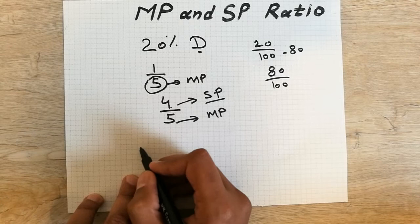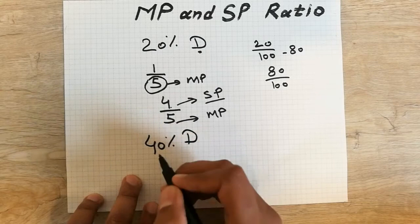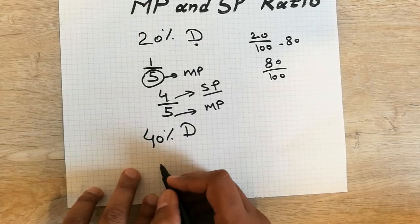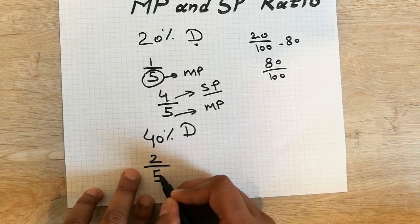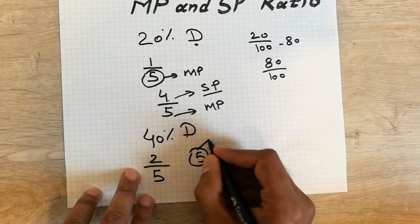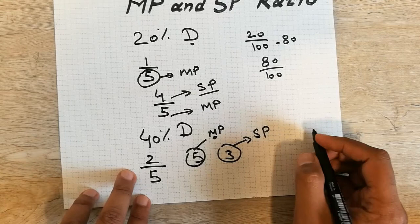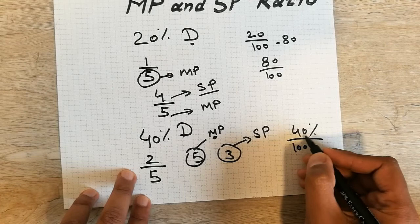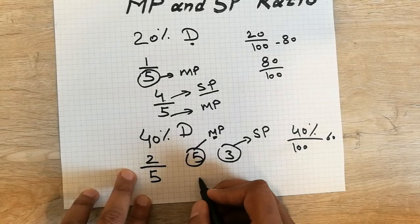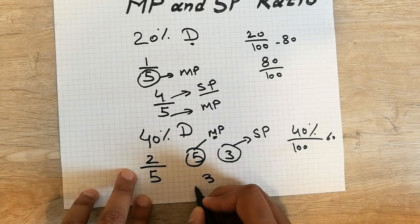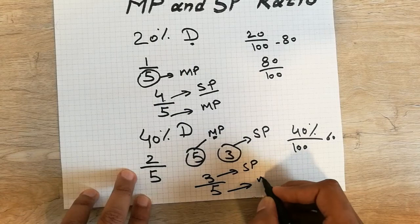For a 40% discount: 40% as a fraction is 2/5. Subtracting: 5 − 2 = 3. So mark price is 5 and selling price is 3. You can verify: 100 − 40 = 60, and 60/100 = 3/5 — the same answer. So selling price is 3 and mark price is 5.